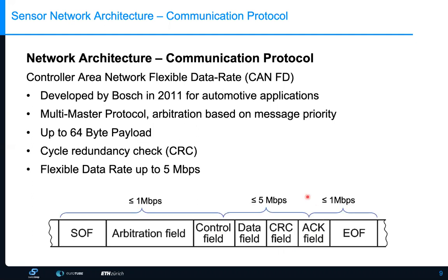Another feature of CAN FD is the flexible data rate — the protocol can switch to a higher data rate partway through the message. For the standard CAN FD protocol, the start of frame, arbitration field, and first part of the control field are sent at up to 1 megabit per second, the data and cyclic redundancy check are sent at up to 5 megabits per second, and the acknowledgement bit and end of frame are sent at 1 megabit per second again.